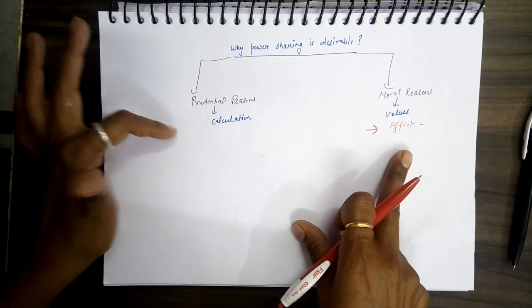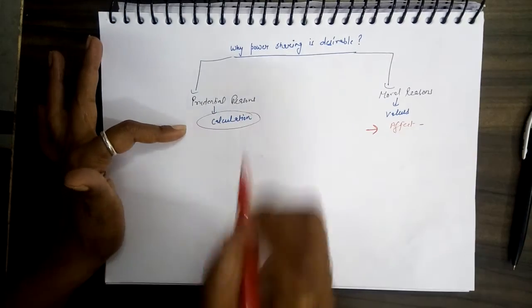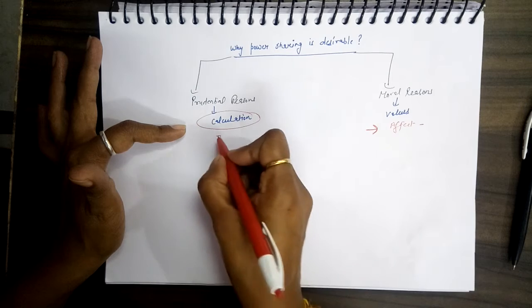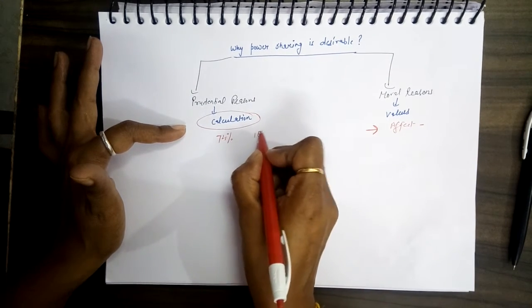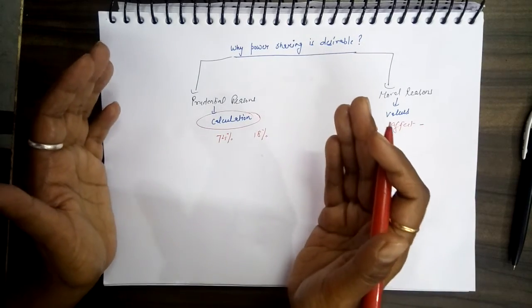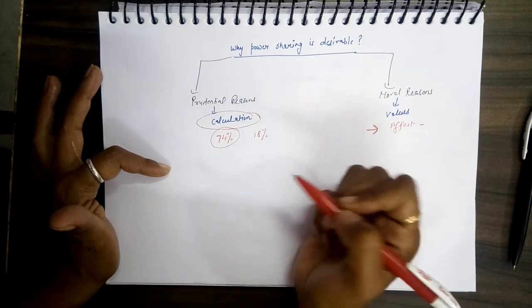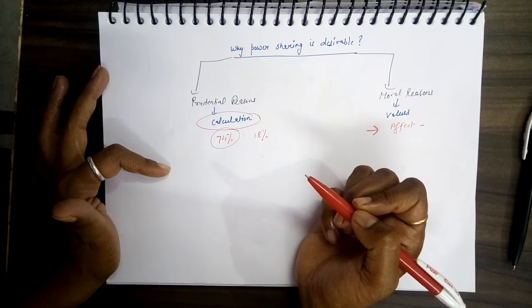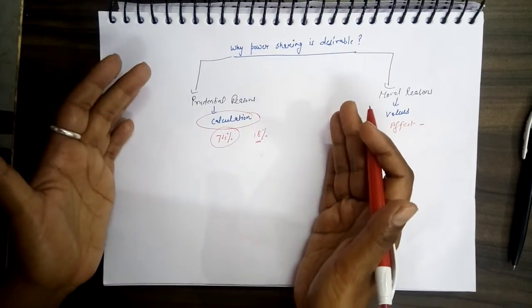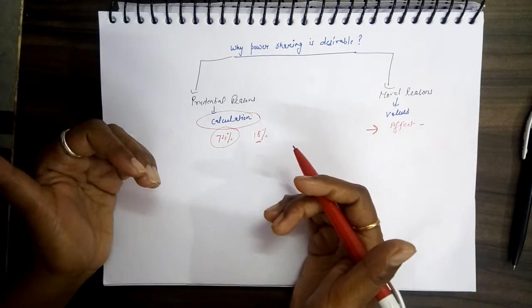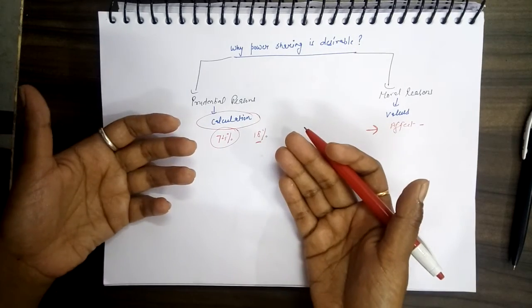The next set of reasons why we should share power is prudential reasons. Prudential means based on calculation. Let us take the example of the Sinhalese only: 74% were Sinhalese and 18% were Tamils. Now, assume there are 100 rupees in the country. If 74% of people would try to fetch all the 100 rupees, then what will happen? These 18% are neglected. So if you calculate in terms of the percentage of people living in the country, if you are 74%, take 74%. Why do we want the entire 100 rupees?